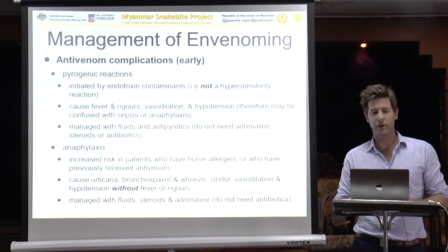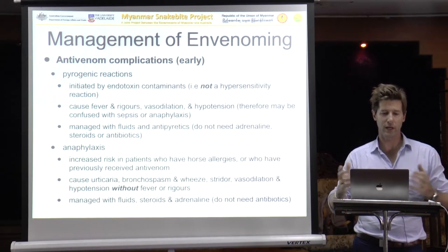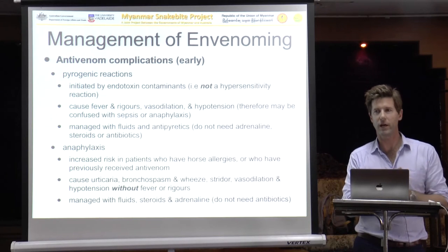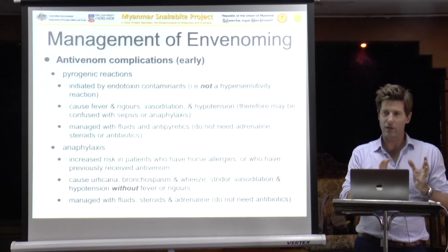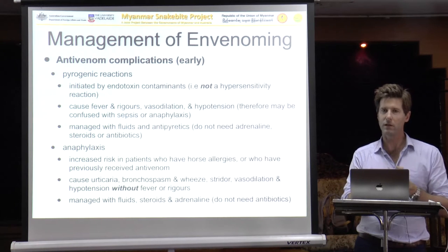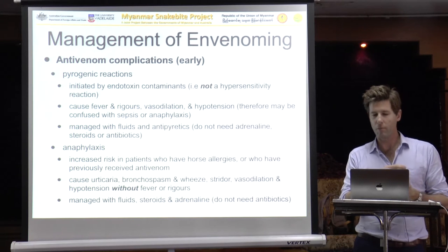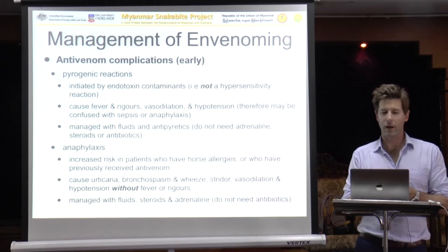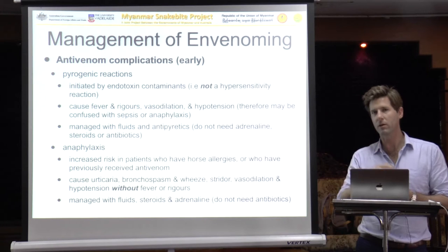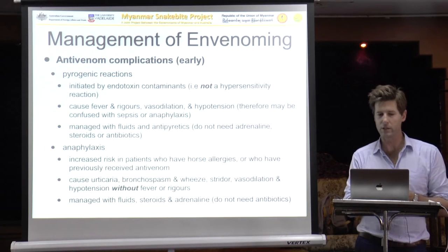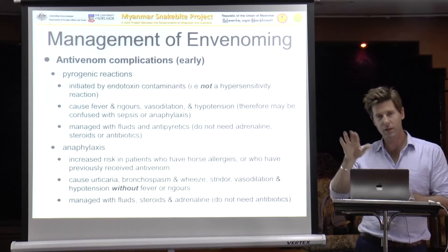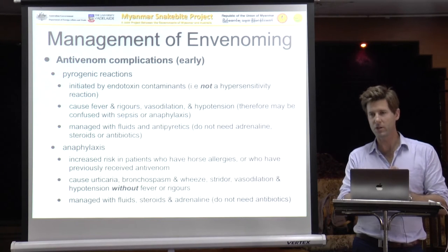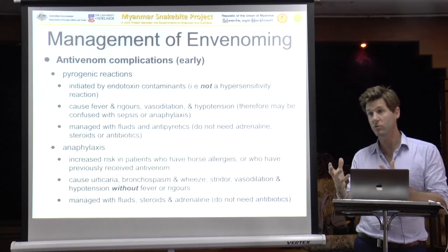There are complications to antivenom use, divided into early and late. Early complications occur in the first couple of hours and can be divided into pyrogenic reactions and allergic or anaphylactic reactions. Pyrogenic reactions are caused by impurities and endotoxins in the fluid being administered; they cause release of cytokines and inflammatory mediators resulting in fever, tachycardia, and low blood pressure, but do not cause swelling of the mouth, pharynx, or airway, or bronchospasm and wheeze. These are managed by giving the patient fluids and bringing their temperature down with paracetamol or ibuprofen. These patients do not need adrenaline, antibiotics, or steroids — this is an endotoxin-mediated pathology that usually settles reasonably quickly on its own.